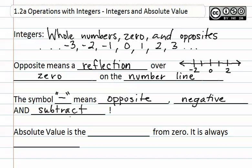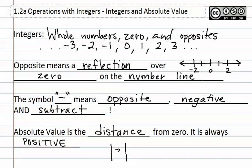Absolute value is the distance from zero, and absolute value is always positive. We use a symbol to show absolute value — it is straight vertical bars with some number or symbol inside, shown with a question mark here.